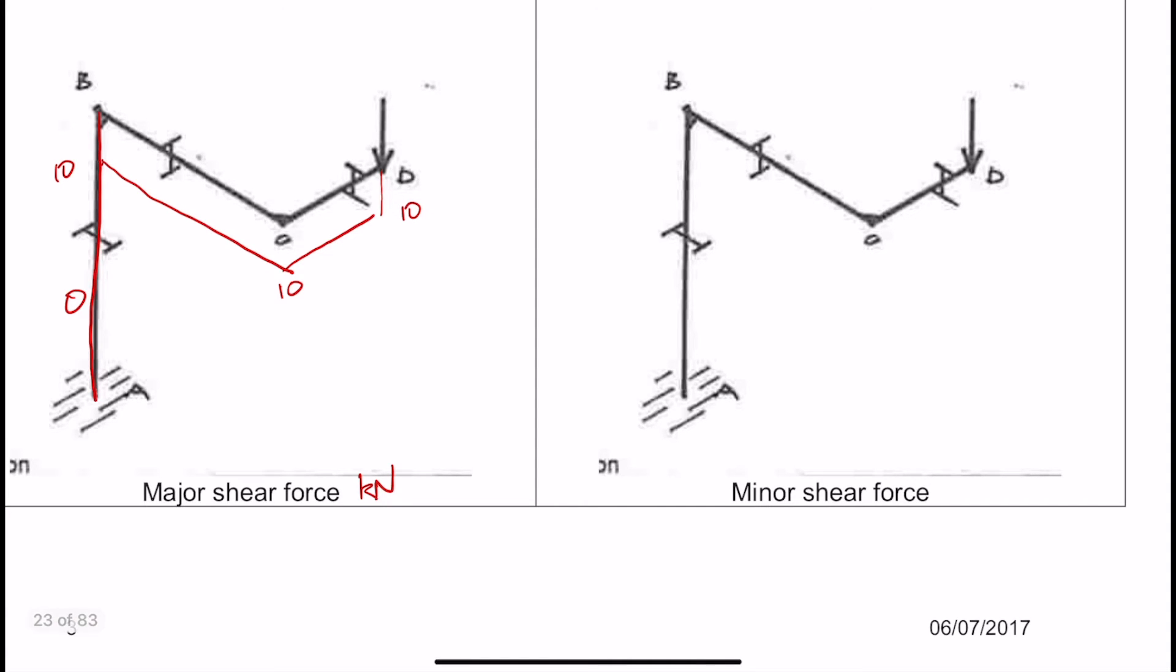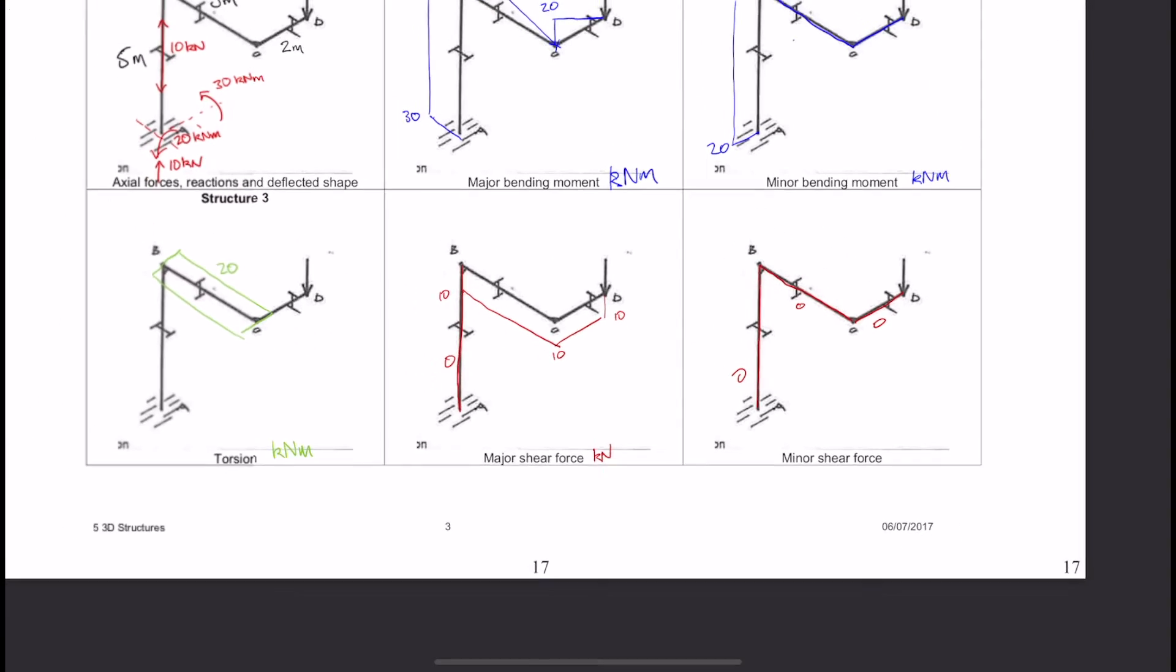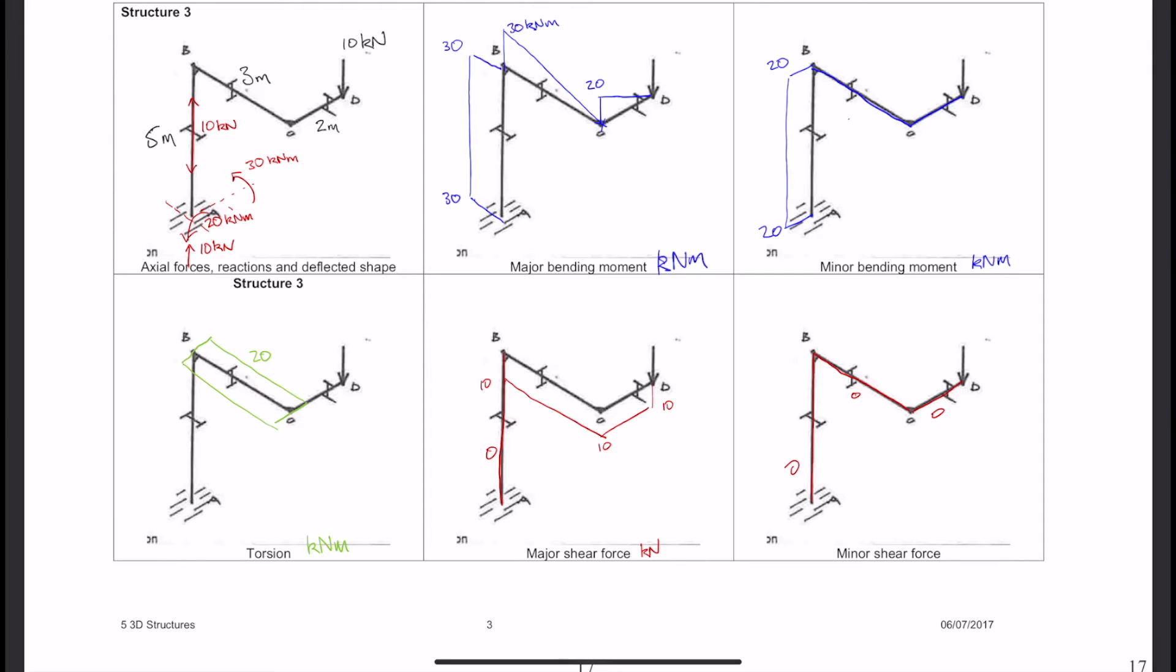And now CD and BC, the minor axis shear force is going to be zero as well. And there's no force there. And this is our full solution. This is how you do a 3D bending moment diagram.